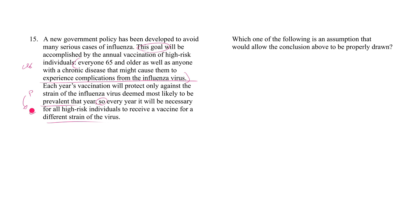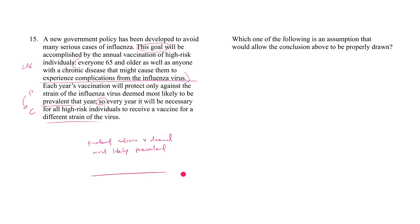The premise is that each year the vaccine will only protect against the strain of the virus that's been deemed most likely prevalent. Why does that mean every year the high-risk individuals have to get vaccinated for a different strain? The premise to conclusion just doesn't flow — there's something missing, a gap. We're standing on one side of the cliff and want to bridge over to the other side.